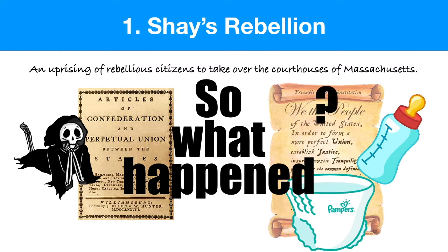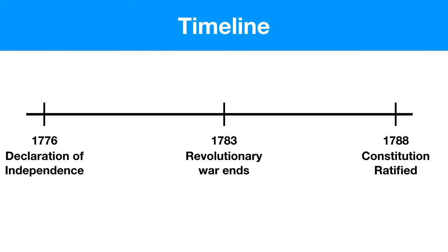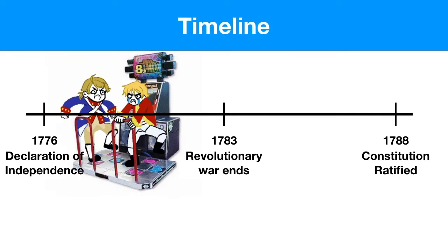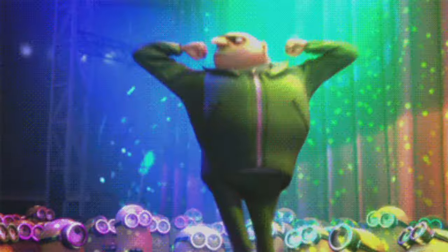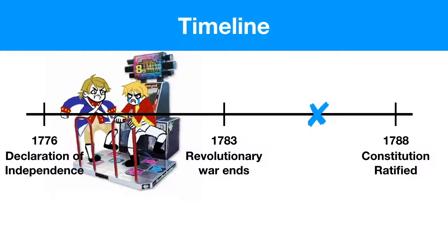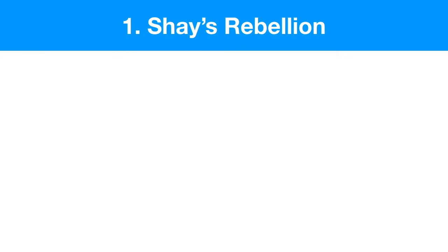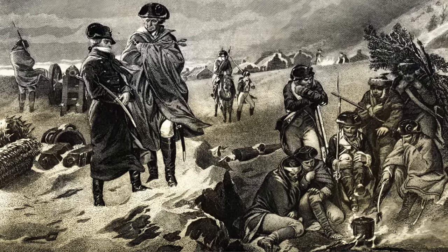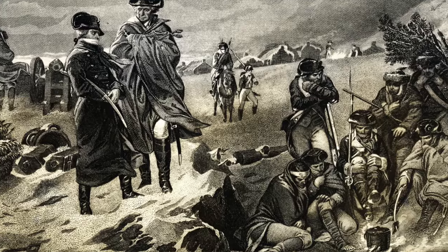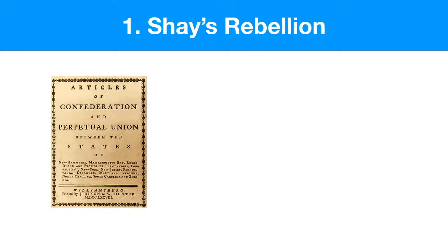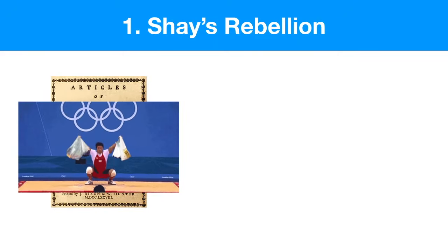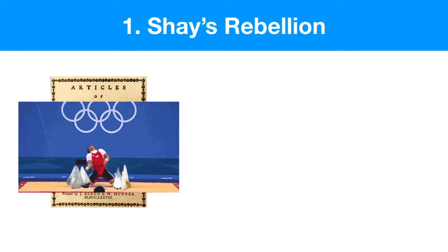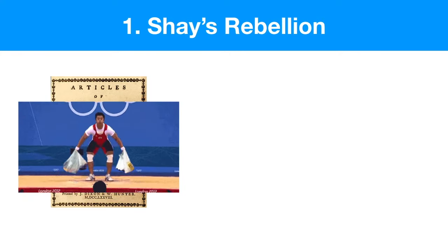So what happened? Well, after the Revolutionary War, sometime before the ratification of the Constitution, our soldiers returned home victorious and happy. They'd just beat the British and were ready to go home and live their lives — except they weren't paid and had to steal food or face starvation. Remember, the government under the Articles of Confederation was unable to collect taxes and do things like pay the military.